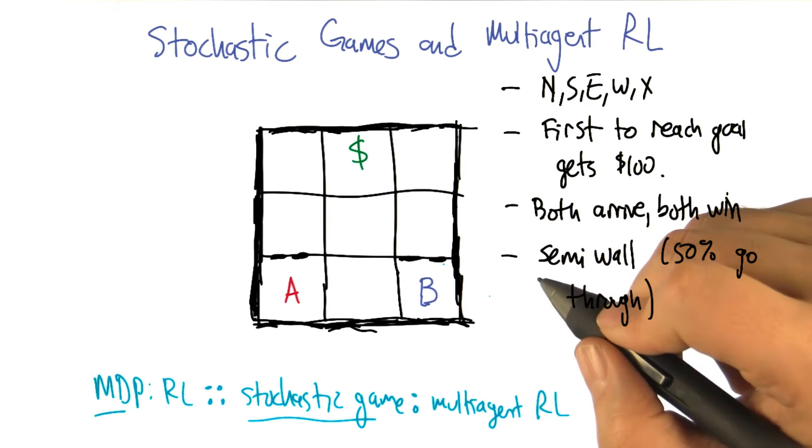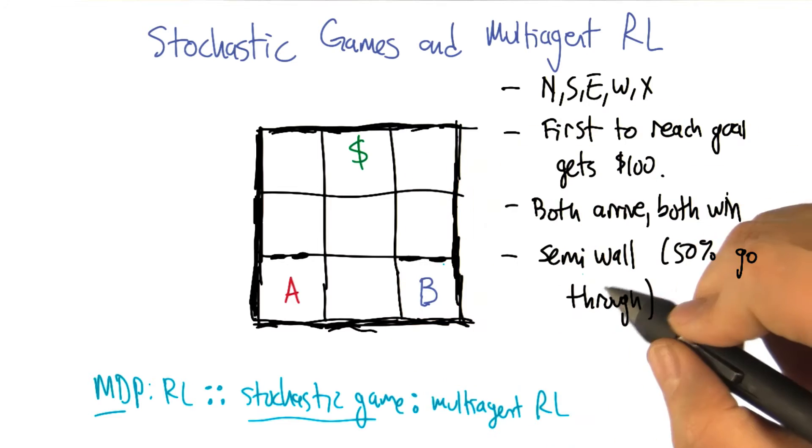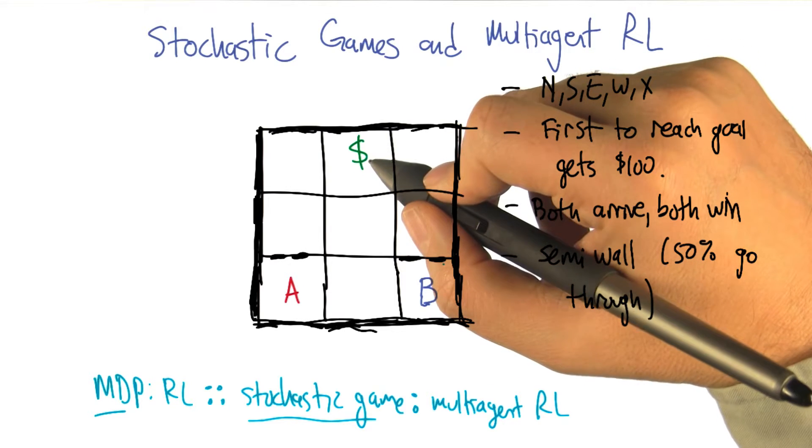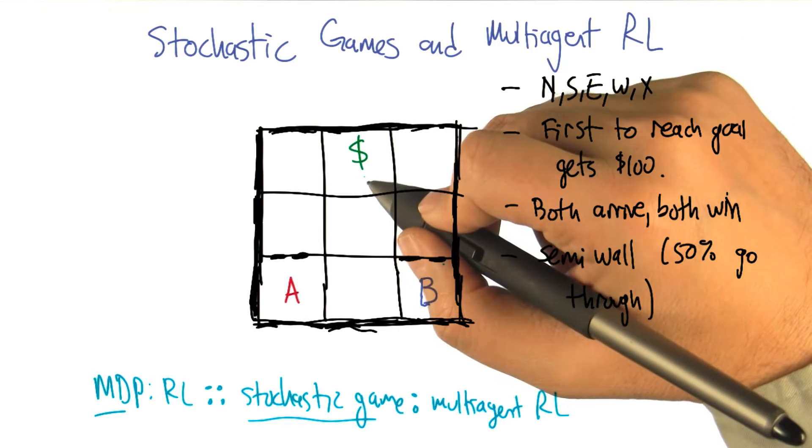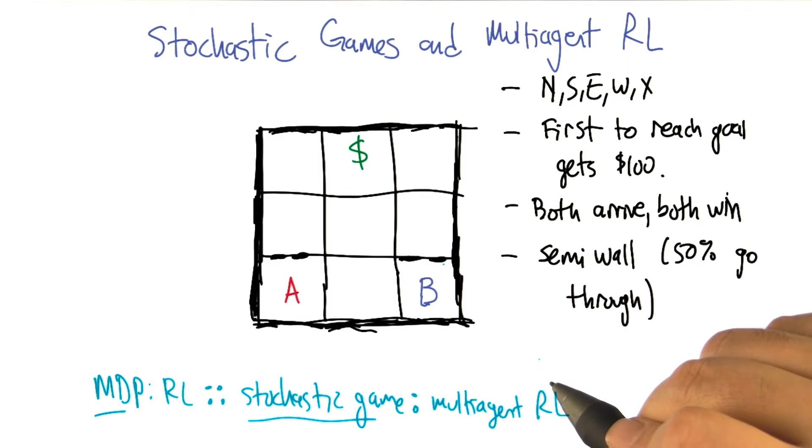Unfortunately, these guys live in the world together. And what happens is, they can't occupy the same square. And as soon as somebody reaches the dollar sign, the game ends. And the other player, if the other player hasn't reached the dollar sign, gets nothing. I see. So now there's a little bit of contention. So what happens if A and B both try to go to the same square at the same time?